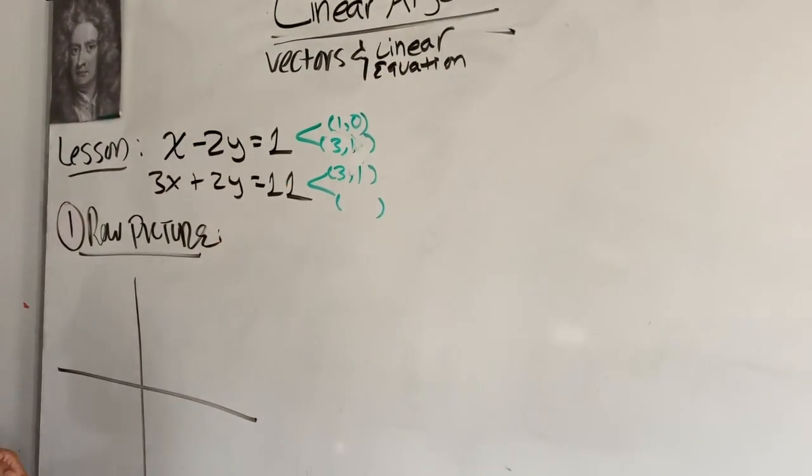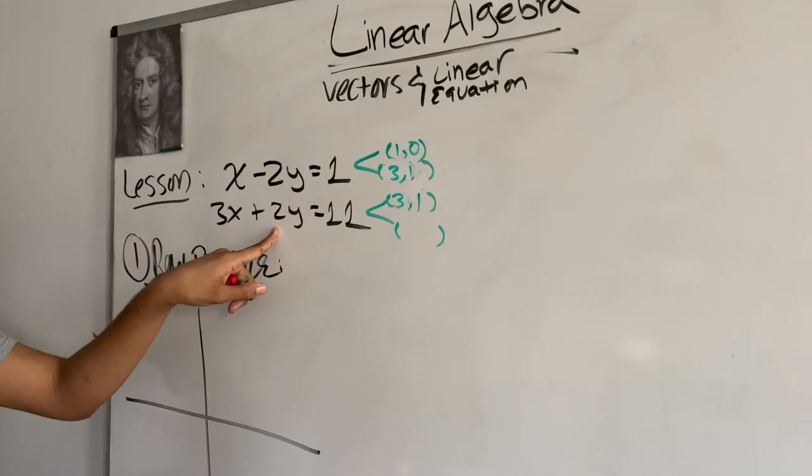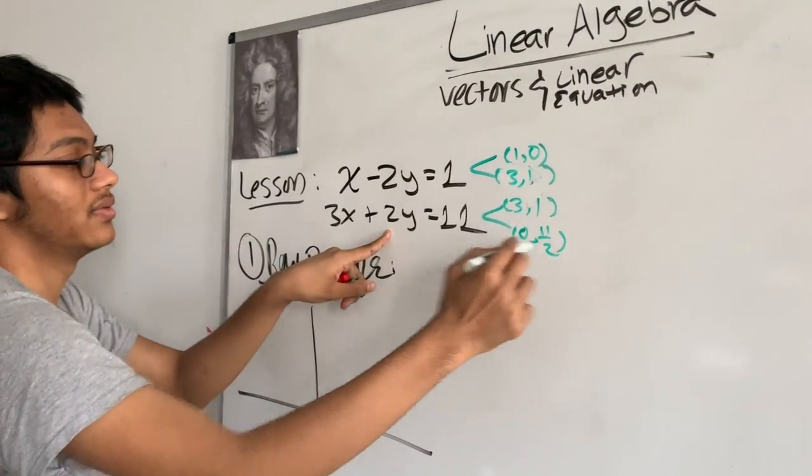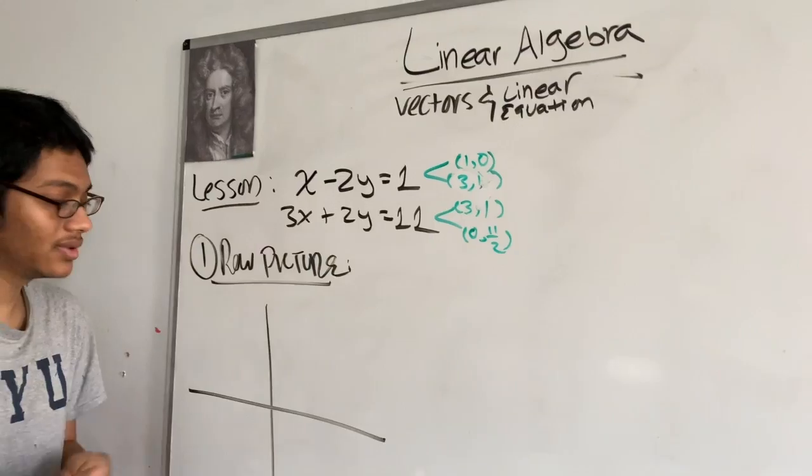I also see that 3, 1 satisfies this line. And what is it? 0, 11 over 2 also satisfies it. So we have four points, so we can graph the two lines.